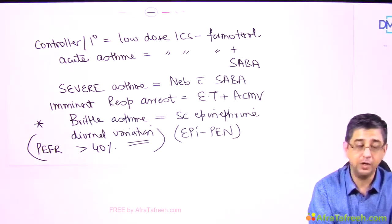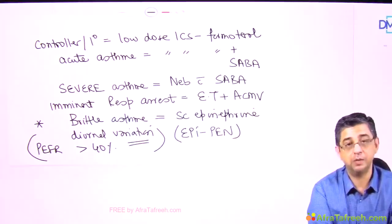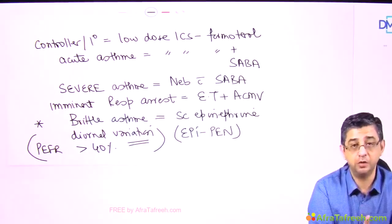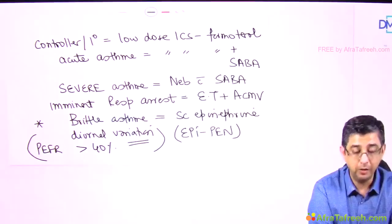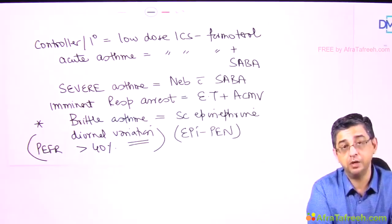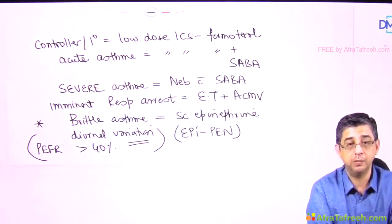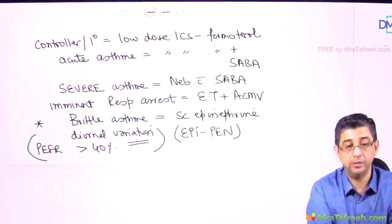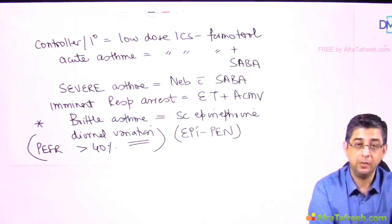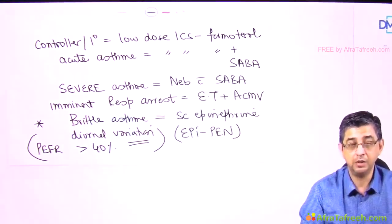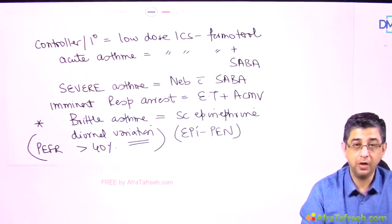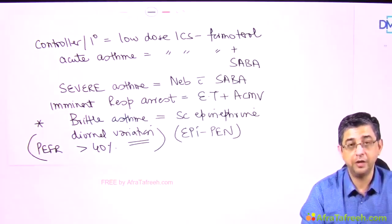One final important point: permissive hypercapnia is contraindicated in patients with raised intracranial pressure. Carbon dioxide is a vasodilator — it will dilate cerebral blood vessels, worsen cerebral edema, and increase intracranial pressure. Permissive hypercapnia is recommended for patients with imminent respiratory arrest in asthma and for severe acute exacerbation of COPD, but is contraindicated in patients with raised ICP. Keep working hard — I am very sure you will come out with flying colors.